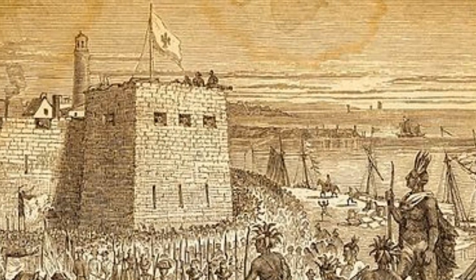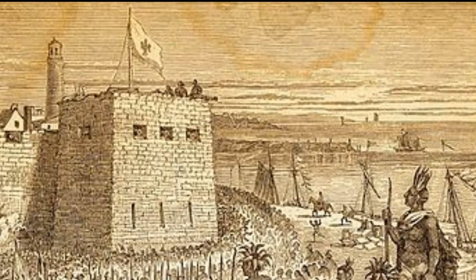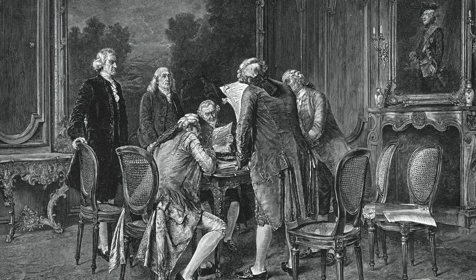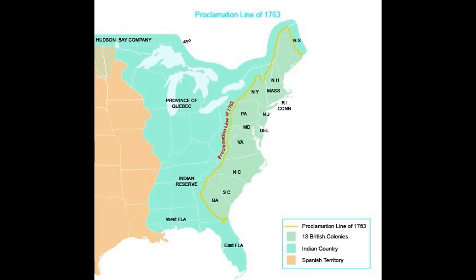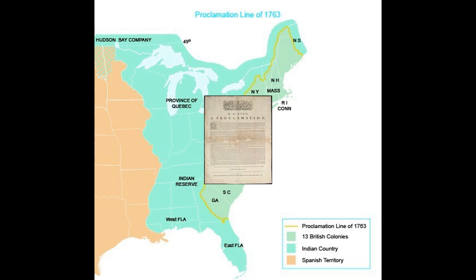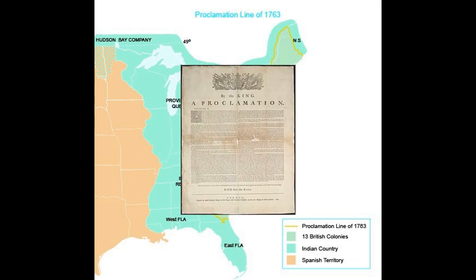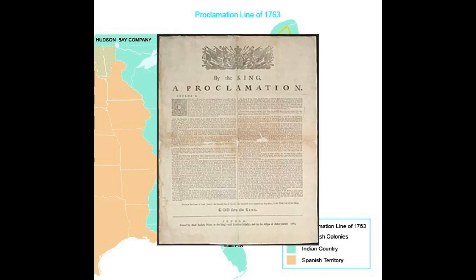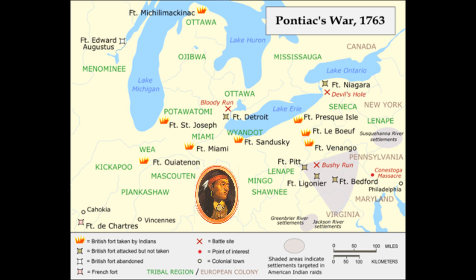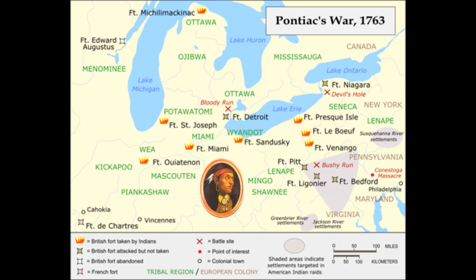1763, the French and Indian War ends with the signing of the Treaty of Paris. The British government passes the Proclamation of 1763, banning European settlement west of the Appalachian Mountains. Pontiac's Rebellion begins, an uprising of Native American tribes against British rule.